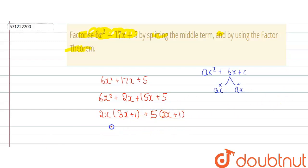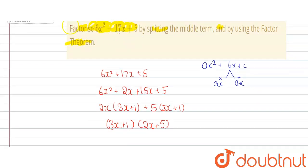Now we will take 3x plus 1 common. So left term will be 2x plus 5. As in this question we need to factorize this equation, so factorized factors of this equation will be 3x plus 1 and 2x plus 5 which is our answer.